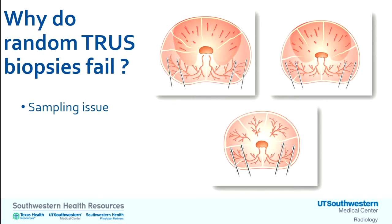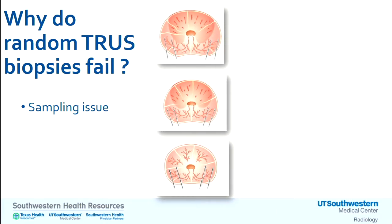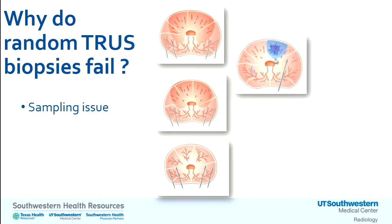One motivation for emphasizing MRI is the shortcomings of the traditional diagnostic workup. The so-called 12-core systematic biopsy samples the prostate in a systematic fashion — base, mid-gland, and apex on both right and left sides, with two cores from each sextant, totaling 12 cores. It is easy to understand why this approach can miss significant cancer. A large area of the prostate goes unsampled, so you can have a false negative biopsy that totally misses the cancer.